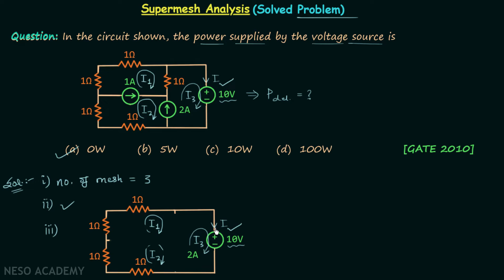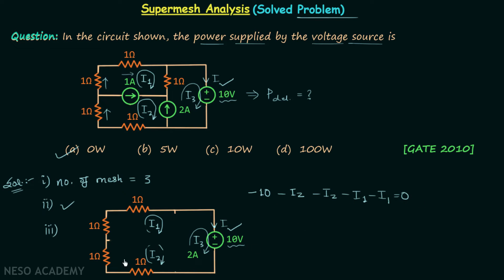We start from this point and move in this direction around the super mesh. We have minus 10, then minus I2 multiplied by 1 for the resistor carrying current I2. Through this next resistor current I1 is flowing, giving minus I1, and through the following resistor current I1 is flowing again, giving another minus I1. This is the KVL equation obtained from the super mesh.